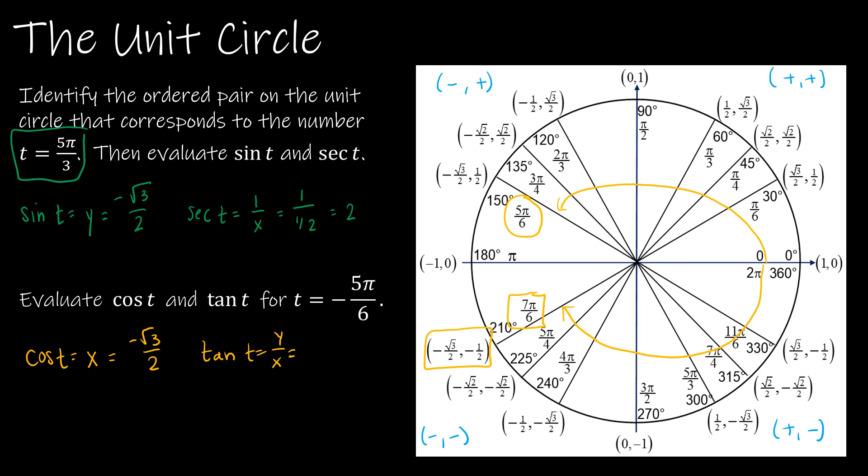So that gives me -1/2 divided by -√3/2. Well, those 2's cancel and the negatives cancel gives me 1 over √3. And if I rationalize that, that gives me √3 over 3.